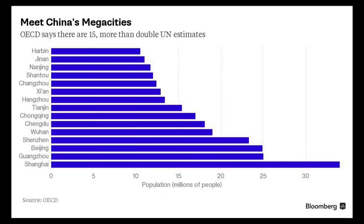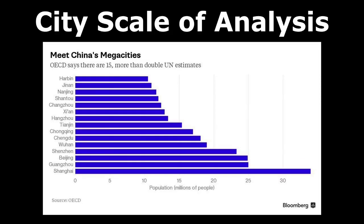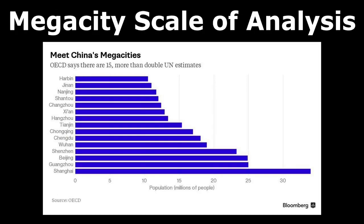Now let's look more at China with its cities. The graph is titled 'Meet China's Megacities.' Each city has a different population, and we're comparing the population between these cities. So this is going to be a city scale of analysis because we're comparing data per city. Since the title specifies megacities, we could also call it a megacity scale of analysis. There are so many scales of analysis that we can be looking at.